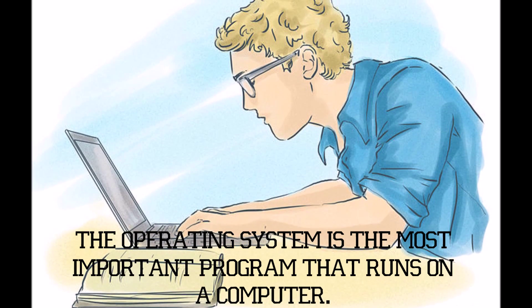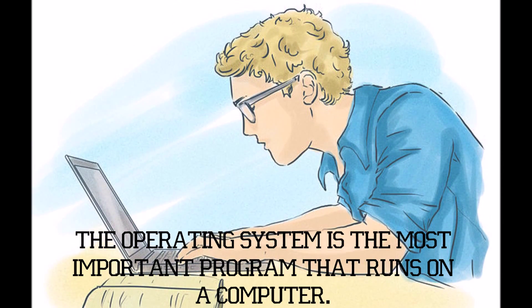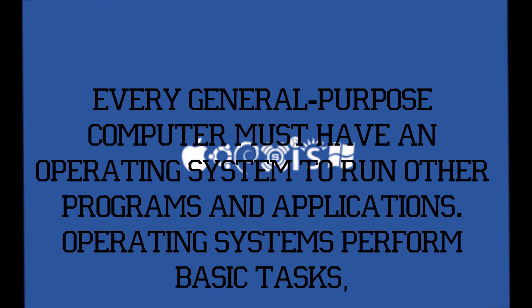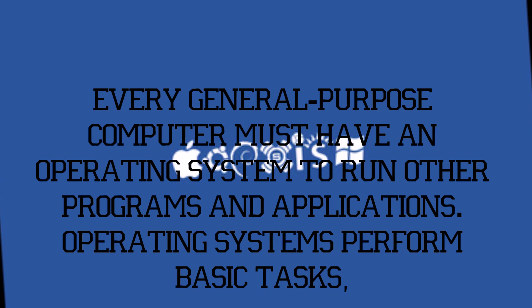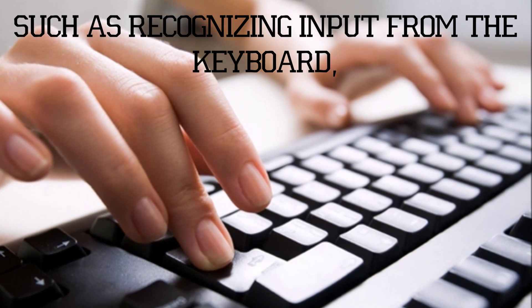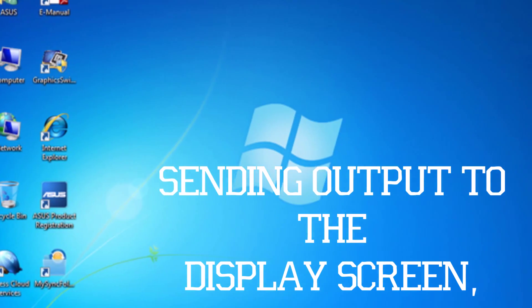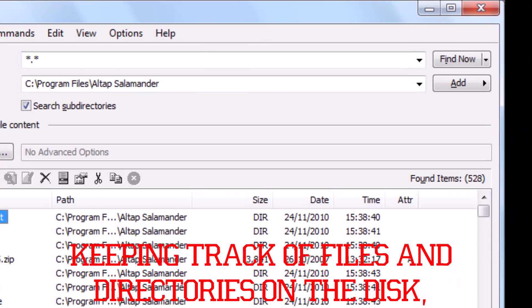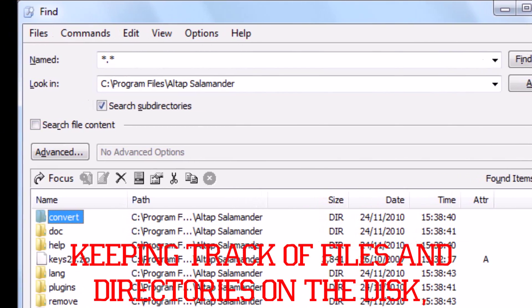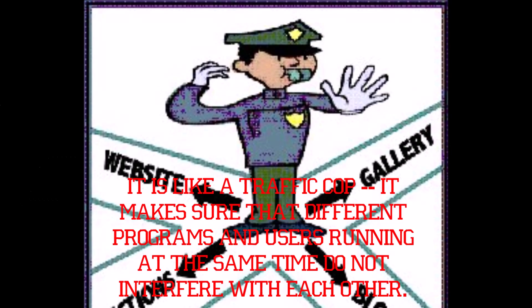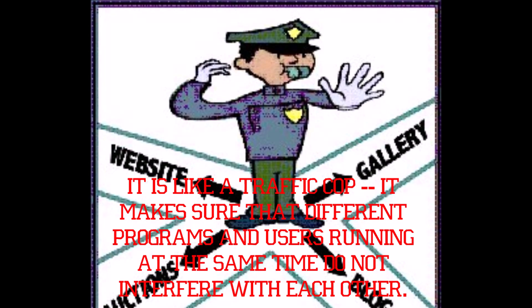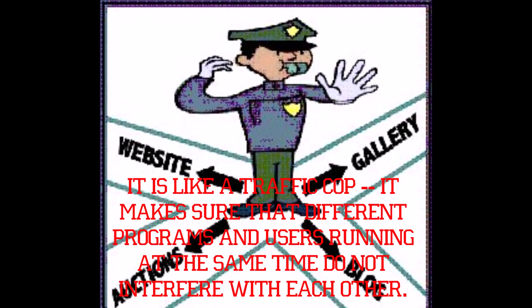The operating system is the most important program that runs on a computer. Every general purpose computer must have an operating system to run other programs and applications. Operating systems perform basic tasks such as recognizing input from the keyboard, sending output to the display screen, keeping track of files and directories on the disk, and controlling peripheral devices such as disk drives and printers. It is like a traffic controller — it makes sure that different programs and users running at the same time do not interfere with each other.